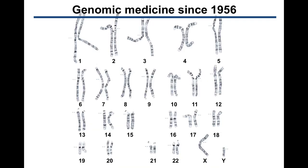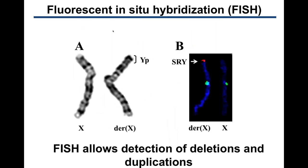Genomic medicine has been practiced since 1956 when the full chromosomal complement of a human cell was determined to be 46 chromosomes, and that XX and XY were the sex chromosomes. What has changed since 1956 is the resolution. Classical cytogenetics Giemsa-stained chromosome spreads show light and dark bands with resolution greater than 5 million base pairs, meaning that hundreds of genes must be missing before a change can be detected using these classical techniques.